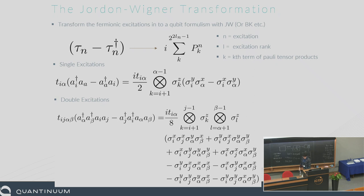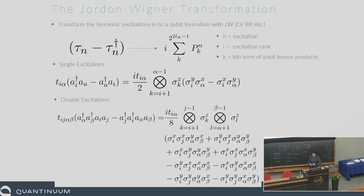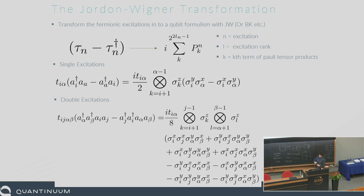Applying this to our excitation operators, we get some quite gnarly things. You can see where the X±iY terms come in, because we have two creation-annihilation operators. You have the Z strings, then a quadratic pair for the singles, and for the doubles you have Z strings and a quartic set of eight terms. From two sets of fermionic annihilation operators you end up with eight terms for the doubles, and two for the singles. The doubles scale much worse in this picture.